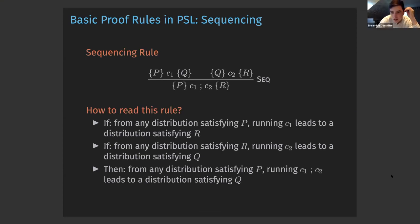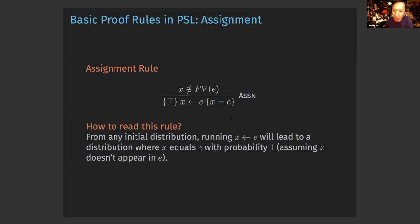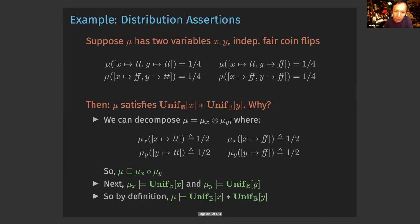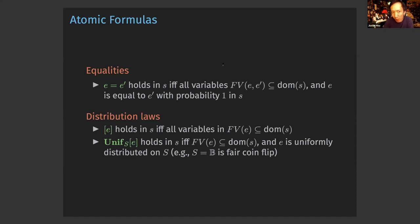There's a question about the assignment rule: is x equals e interpreted in a distribution over memories? Yes — all of these assertions are interpreted in terms of distributions, not single memories. So E equals E' holds in a distribution S if all variables are present and E equals E' with probability one. Whenever you sample a memory from the distribution, you will find the memory has x equal to e. If you ask whether an assertion holds in a single memory, the official answer is that it's not defined — these are all interpreted in terms of distributions.